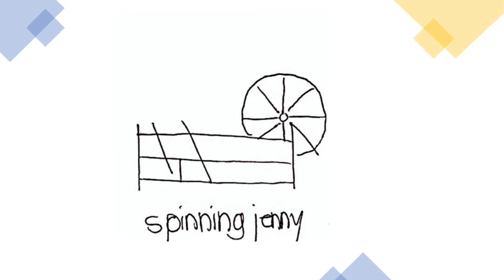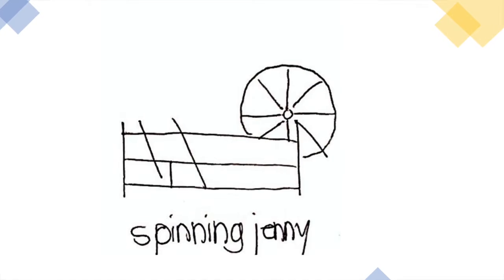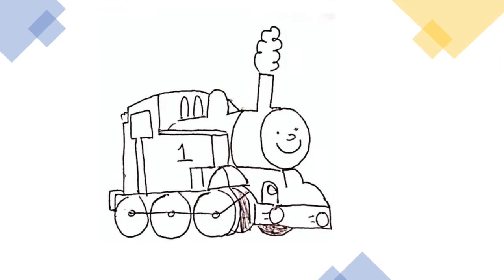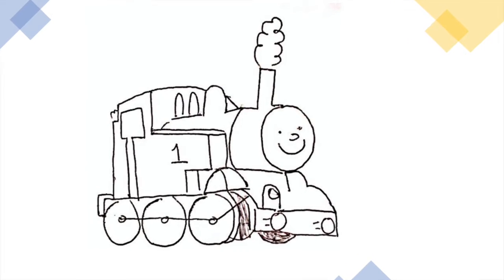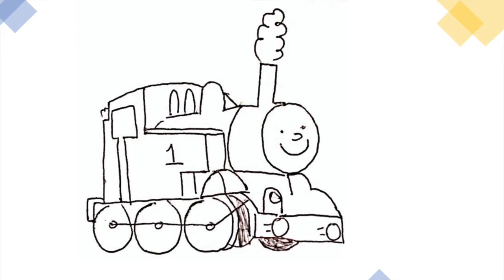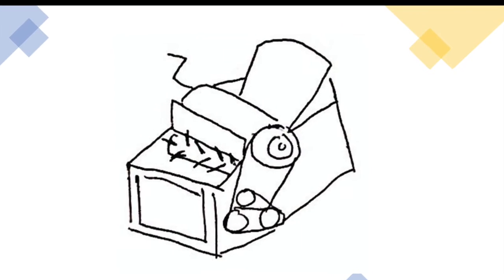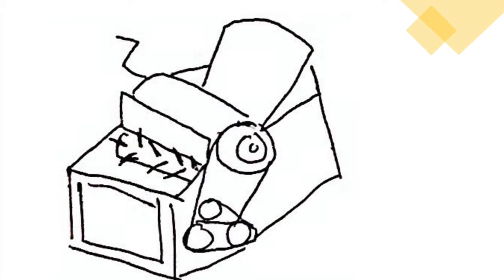The spinning jenny increased wool mills productivity which meant more clothes manufactured. The steam engine was invented which made factories more efficient and led to trains. The cotton gin made cotton production faster which gave us more cotton products.